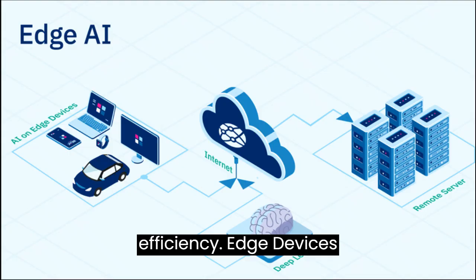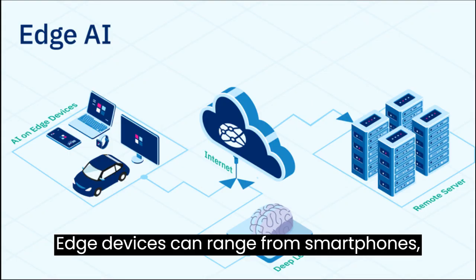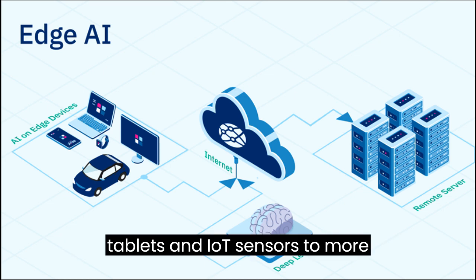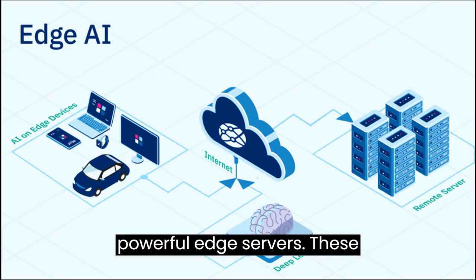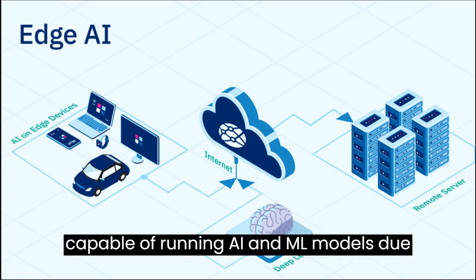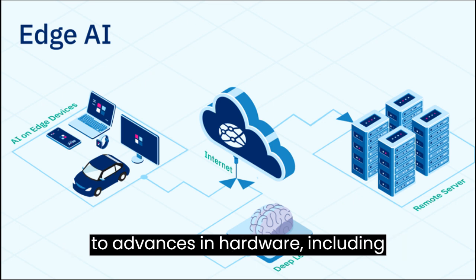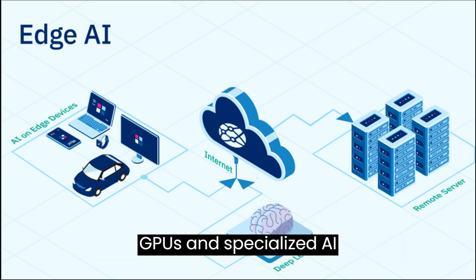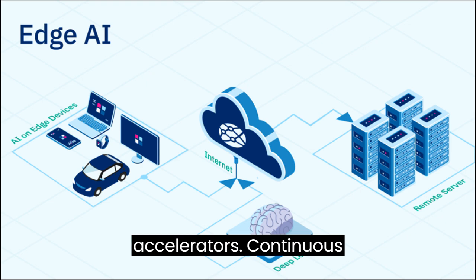Edge devices can range from smartphones, tablets, and IoT sensors to more powerful edge servers. These devices typically have processing capabilities that are increasingly capable of running AI and ML models due to advances in hardware, including GPUs and specialized AI accelerators.